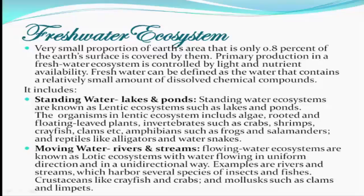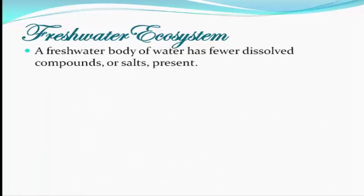Freshwater ecosystems also involve moving water — rivers and streams. Flowing water ecosystems are known as lotic ecosystems, with water flowing in a uniform direction. Examples are rivers and streams, which harbor several species of insects and fishes, crustaceans like crayfish and crabs, and mollusks such as clams. A freshwater body of water has fewer dissolved compounds or salts compared to the marine ecosystem.